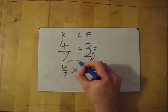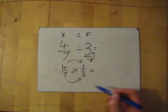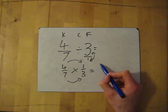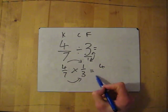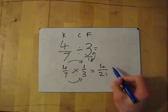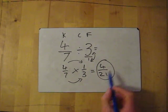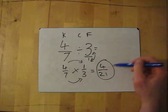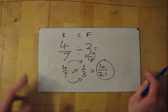And then it's a simple multiplication. Just multiply the top two numbers, multiply the bottom two. You're done. 4 times 1 is 4 and 7 times 3 is 21. So my answer is 4 over 21. So 4 7ths divided by 3 is 4 21ths.